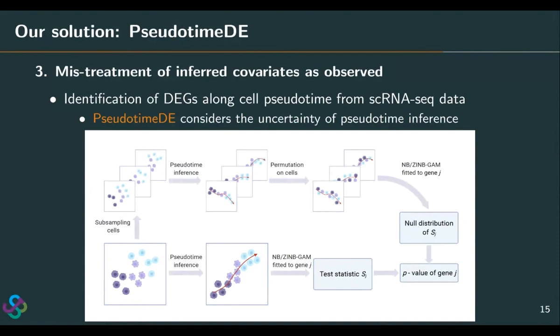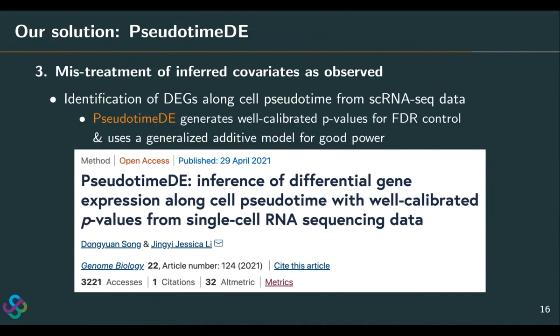Motivated by this, we developed a method called pseudotime DE. The advantage of pseudotime DE is that we perform subsampling to capture the pseudotime inference, and therefore derive a correct null distribution of the test statistic that considers pseudotime inference uncertainty, so we can generate valid p-values. Another advantage is that pseudotime DE uses the generalized additive model to gain good power. Although Monocle 3 had good p-value distribution, it uses the more restrictive generalized linear model, so its power is not as large. Our work was published in Genome Biology earlier this year.